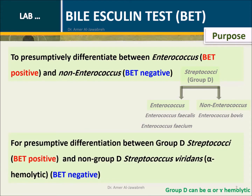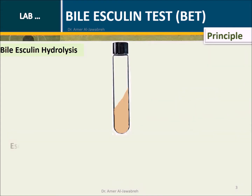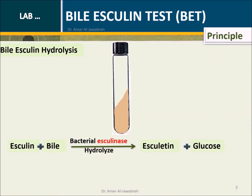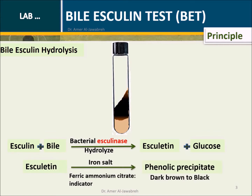Principle: Bacteria like Enterococcus faecalis produce the enzyme Esculinase that hydrolyzes Esculin into glucose and Esculetin in the presence of 4% bile. The Esculetin then reacts with the ferric ammonium citrate in the medium to produce a dark brown to black phenolic precipitate.